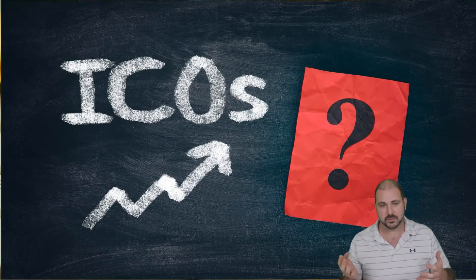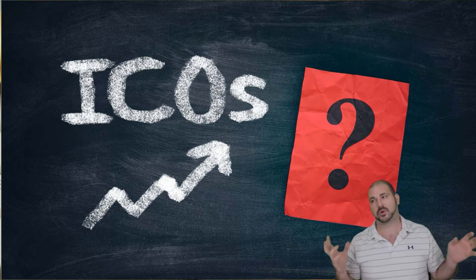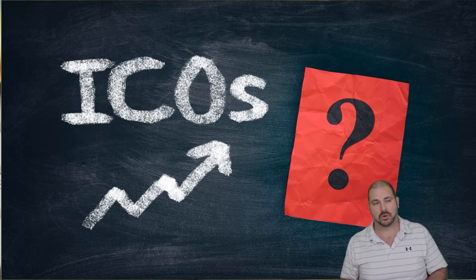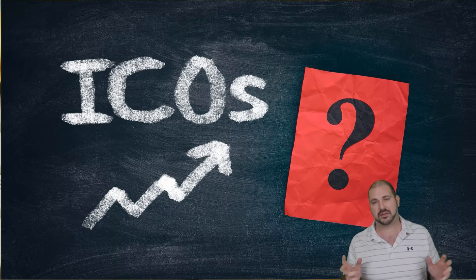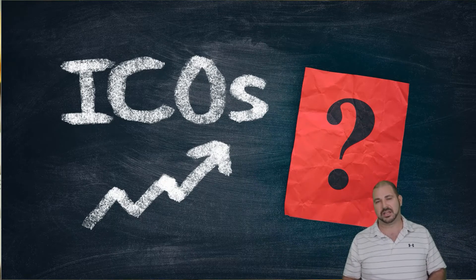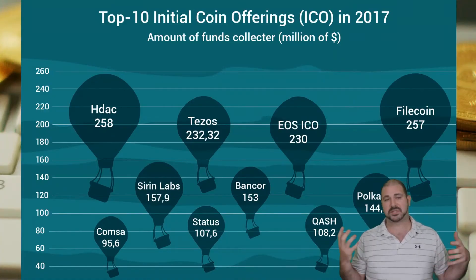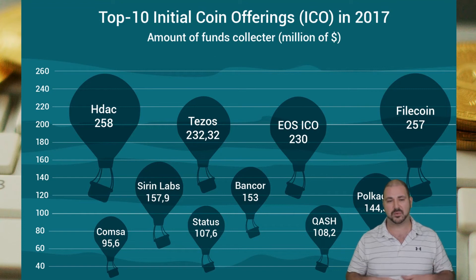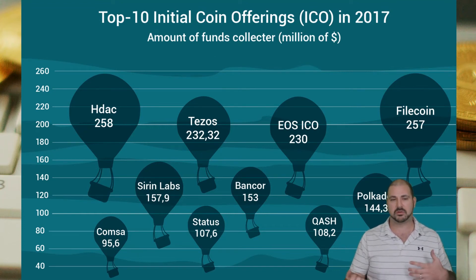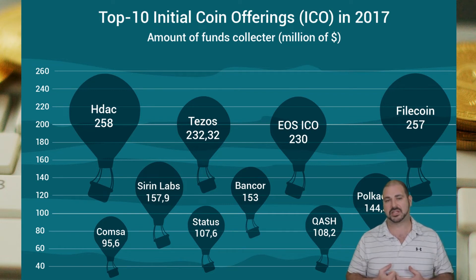ICOs — Initial Coin Offerings — what are they? These were the big boom of 2017 and early 2018, where people had ideas they thought were great and others invested in them without real business plans. Most of them failed or were outright scams because they were unregulated. Here are the top 10 ICOs of 2017 — some you probably know and some you don't. Big ones included Tezos and EOS.